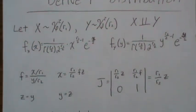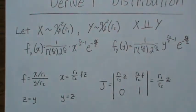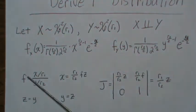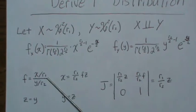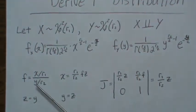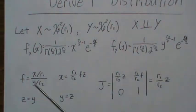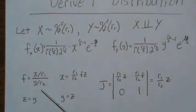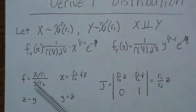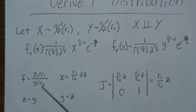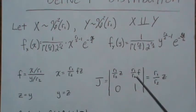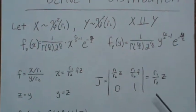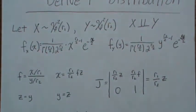We set up a mapping from x and y to f and z. Ultimately, f is the chi-square divided by its degrees of freedom, divided by a chi-square divided by its degrees of freedom. Then we'll find the joint density of f and z and integrate out z. The Jacobian of this transformation ends up being r1 divided by r2 times z.